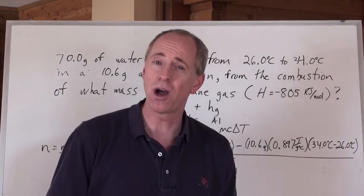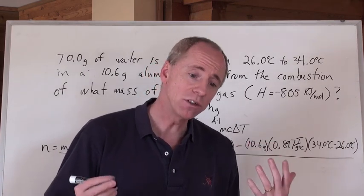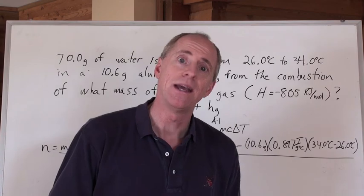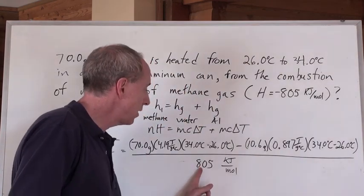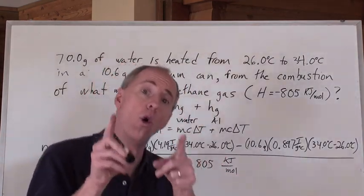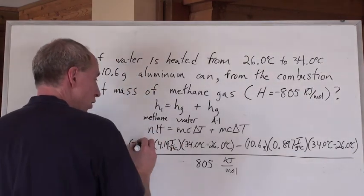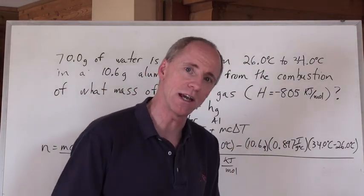If you divide by that 805, you're going to get the wrong answer. Your answer is going to be approximately 1,000 times too big. And the reason is, is because you didn't convert this to joules, or you didn't convert all of this like you should have. And I'll tell you about that in just a second.